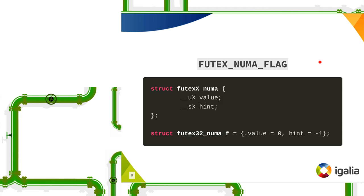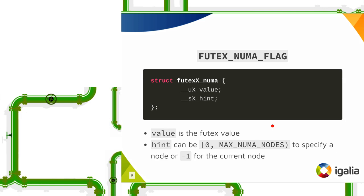And this is the proposed interface. So we will have different structures for being NUMA-aware. We will have H16, 32, and 64. You basically put together the Futex value and the hint. Hint here basically means if you use minus one, that means you want to operate on the current node. And if you use something between zero or maximum nodes, that means you want to operate on that specific node.